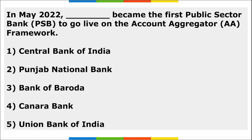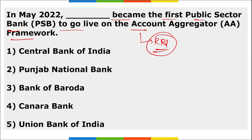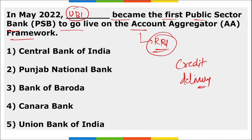In May, Union Bank of India became the first public sector bank to go live on the Account Aggregator (AA) framework issued by RBI. This was an RBI initiative to improve credit delivery.